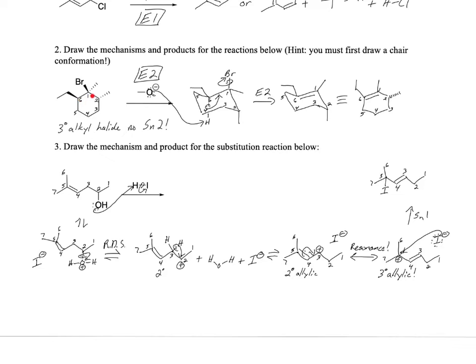So this is a tertiary electrophile, so that means it can't do SN2 because it's too sterically bulky. And then you look at the nucleophile. We've already eliminated SN2 at this point, hopefully.